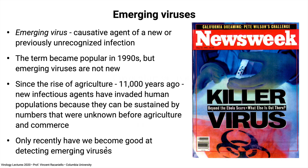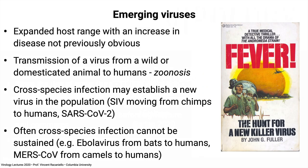The popular press is very interested in emerging viruses, as witnessed by this 1995 Newsweek cover on Ebola virus. An emerging virus can be a virus with an expanded host range or an increase in disease we didn't previously notice. For example, Zika virus was discovered in 1947; however, it wasn't until 2015 that we recognized that that mosquito-transmitted flavivirus could cross the placenta and cause microcephaly and other congenital birth defects.